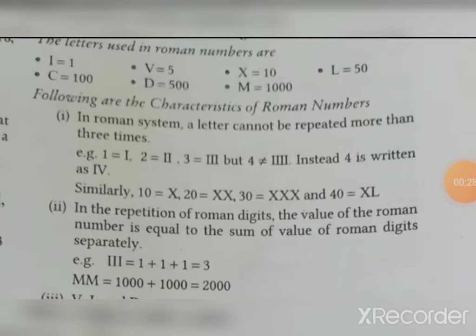Roman numbers have rules to follow up. Roman system letter cannot be repeated more than 3 times. I is 1, II is 2, III is 3. 4 is not IIII, it's IV. This is the first rule. In Roman system, letters cannot be repeated more than 3 times.